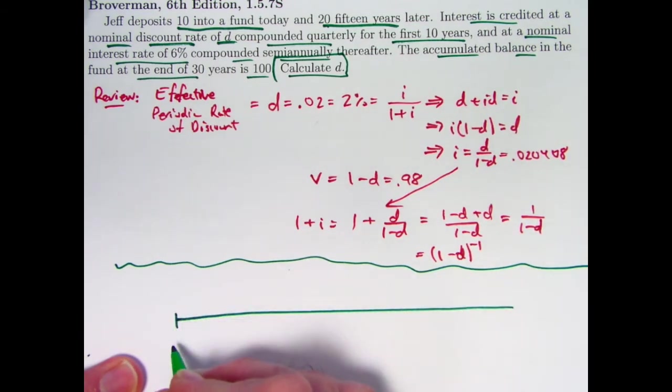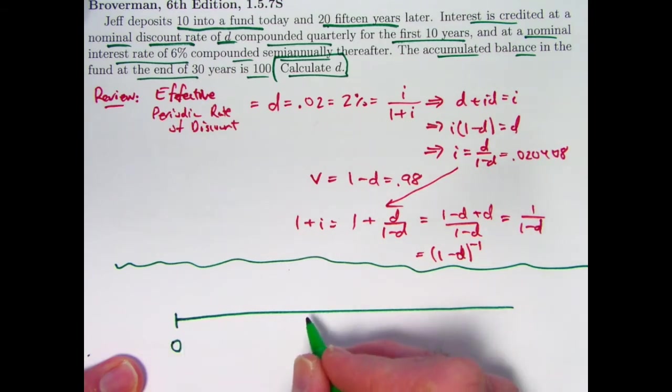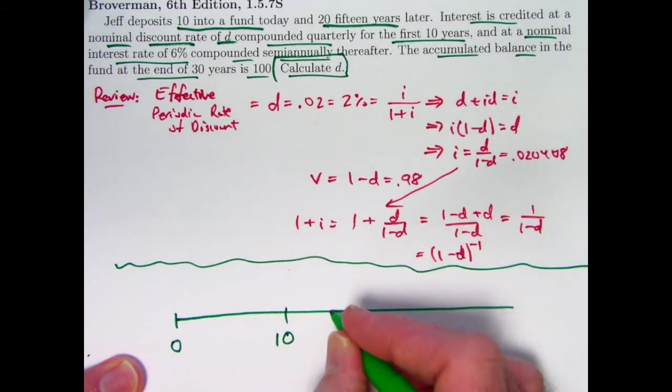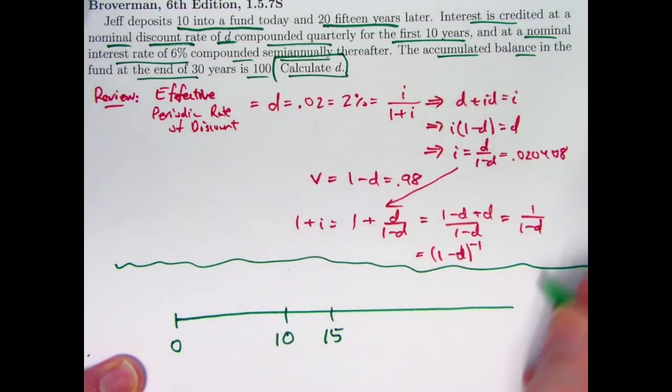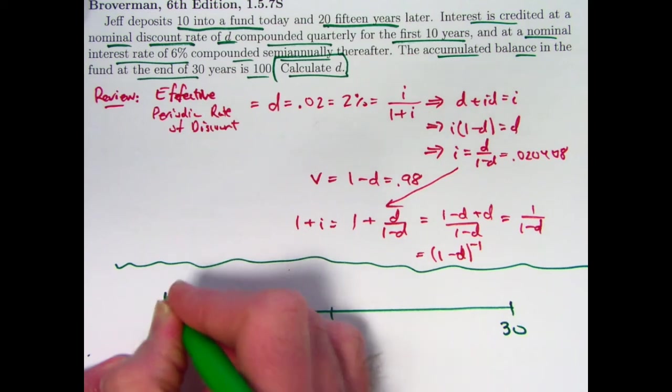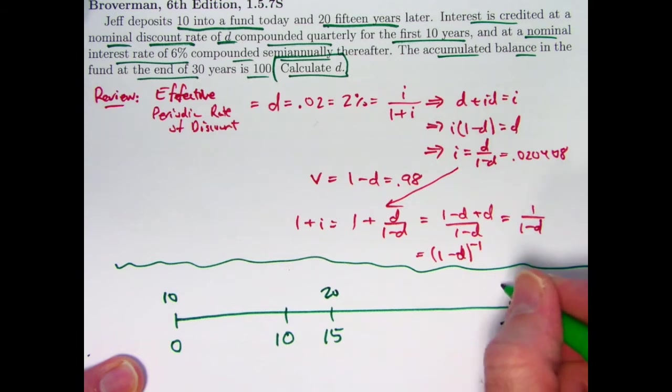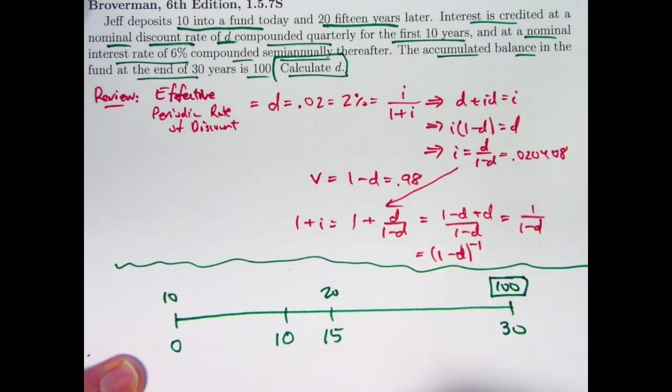Let's go ahead and draw a number line. Here's time 0. Time 10 will be important because that's when the way interest is calculated changes. Time 15 is important as well because you're going to deposit 20 there. And 100 is the value at time 30. So we deposit 10 at time 0 today. 20, 15 years later, the future value of these things at time 30 is 100. We're not depositing 100. That is the future value.